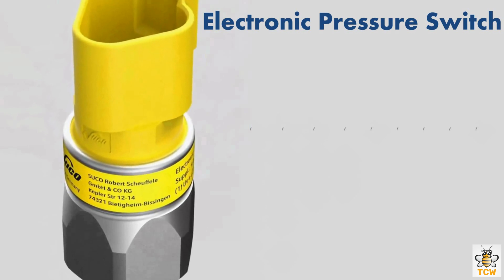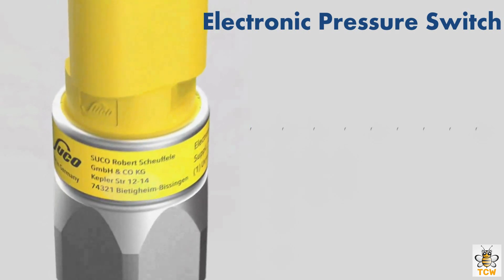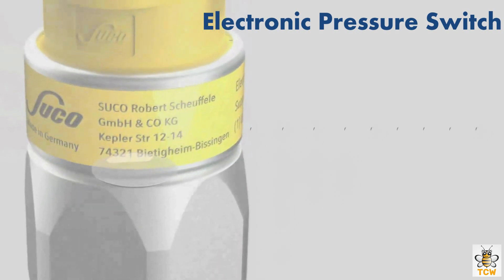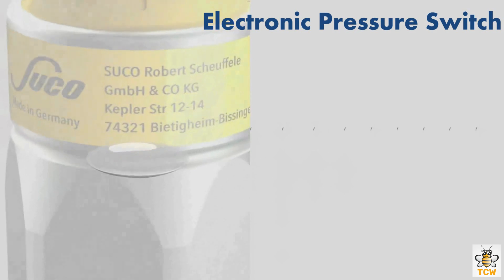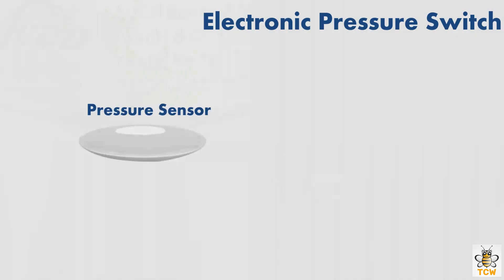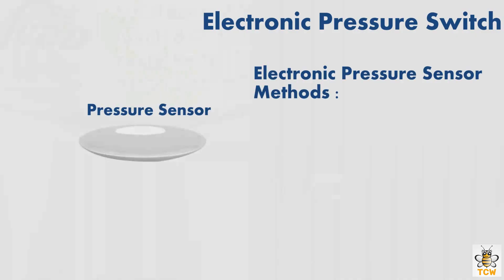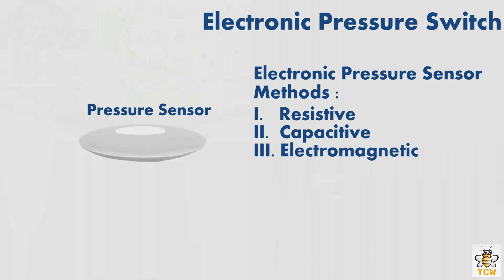The electronic pressure switch works primarily by changing the electrical properties of the material used as a pressure sensor. This includes the electrical resistance of the materials, called the resistive method; or the ability of materials to store electrical energy, called the capacitive method; or changing the magnetic properties of the materials, called the electromagnetic method.